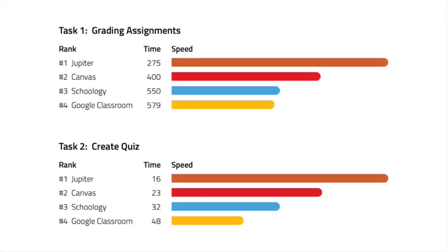The second task was to create a quiz with 10 questions. The results here happened to be in the same rank order. In fact, when we looked at other tasks, if there were differences, they tended to be in the same order. So this seemed like a consistent measure. Notice the differences are quite large, even more than double.